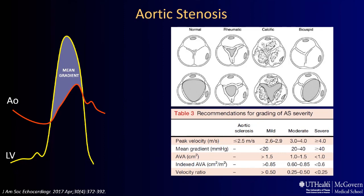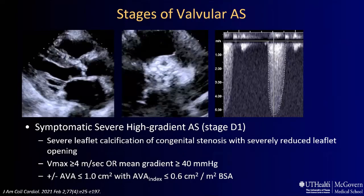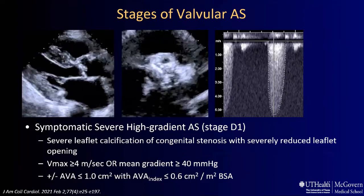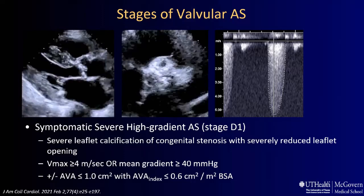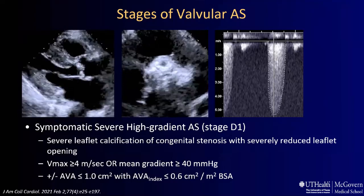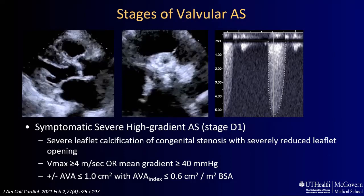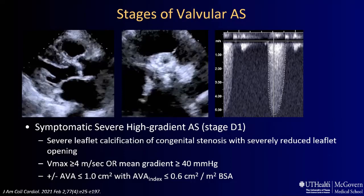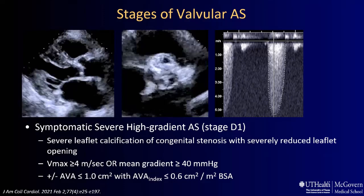The new ACC/AHA guidelines continue to recommend the use of disease stages in patients with valvular heart disease. Stage C is severe asymptomatic: C1 with normal ventricular function and C2 with decompensated ventricle. Stage D is severe symptomatic. The most common and classic example is the symptomatic severe high-gradient aortic stenosis, Stage D1, associated with severe leaflet calcification and reduced leaflet opening, with velocities and gradients as just mentioned.